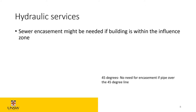With sewer, Sydney Water has regulations: if the sewer runs inside the site and sits within the influence zone of the building's footing, the pipe must be encased — meaning covered with concrete. The way to determine this is by running a 45-degree angle from the footing; if the pipe falls within that influence zone, encasement is required. If not, no encasement is required.